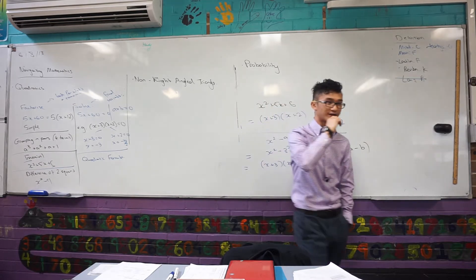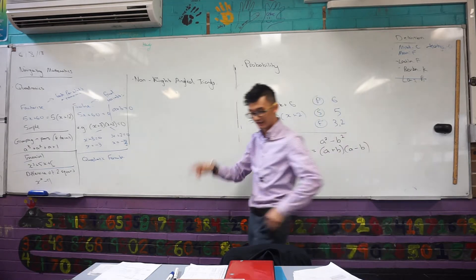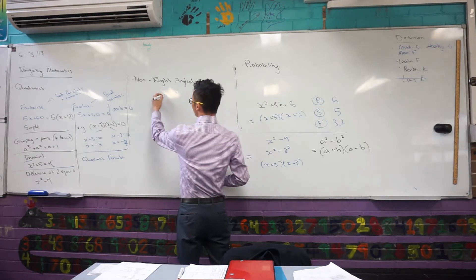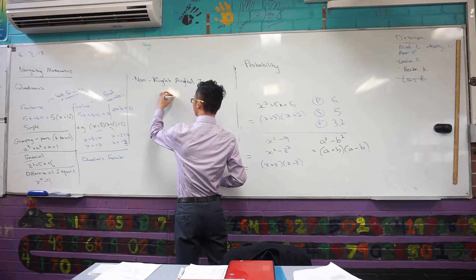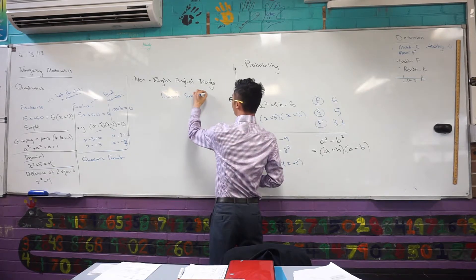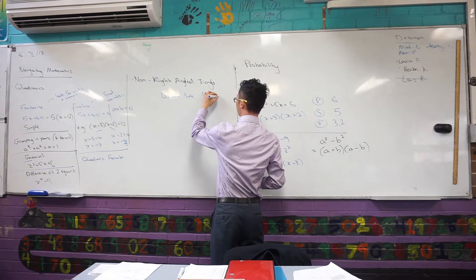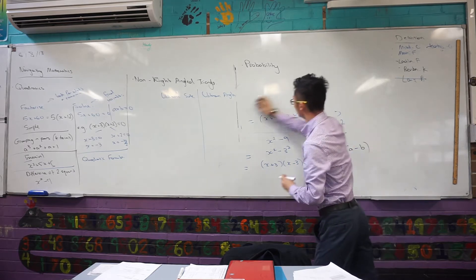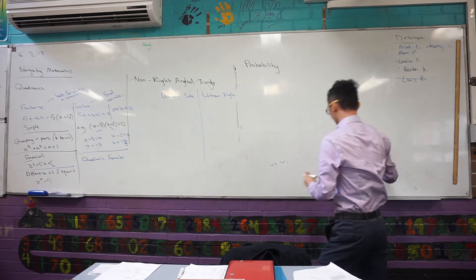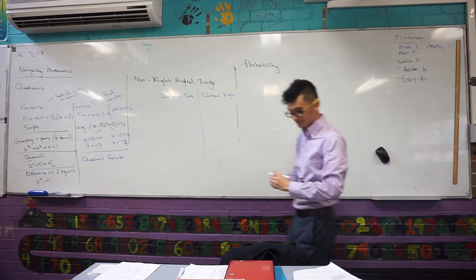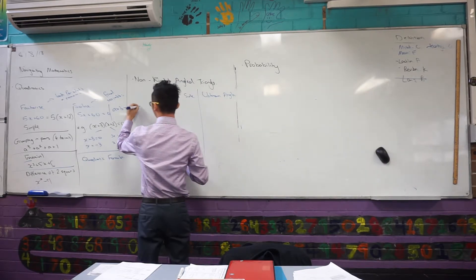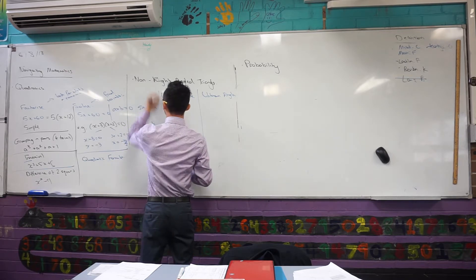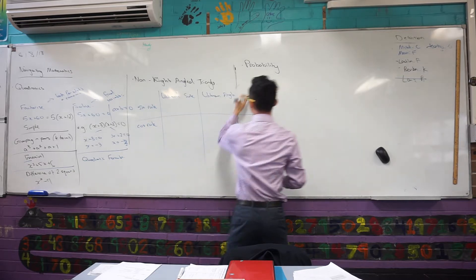Non-right-angled triangles. There are two things that you are asked to do generally. You are generally either asked, can you find an unknown side or can you find an unknown angle. Now, there are also two formulas that we learnt to do those. What were they? Sine and cosine. Sine and cosine. So I either have the sine rule or I have the cos rule. The question is, when do I use which one?